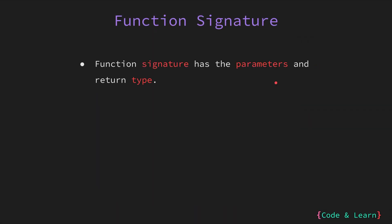Now let's look at what function signatures are. The function signature in Go includes the parameter, number of parameters, the parameter type, the return type, and the number of return values. This signature is important for defining the structure and behavior of a function. Let's look at them with an example.